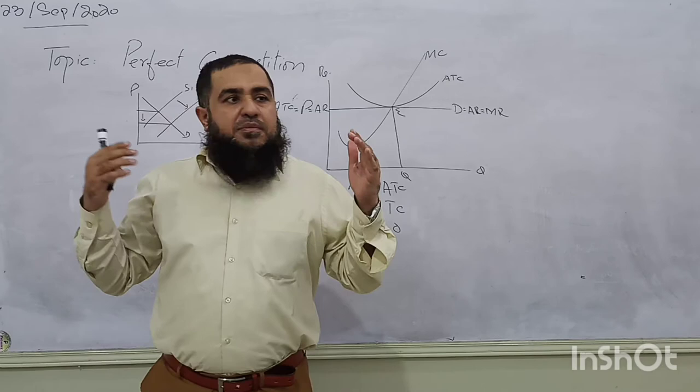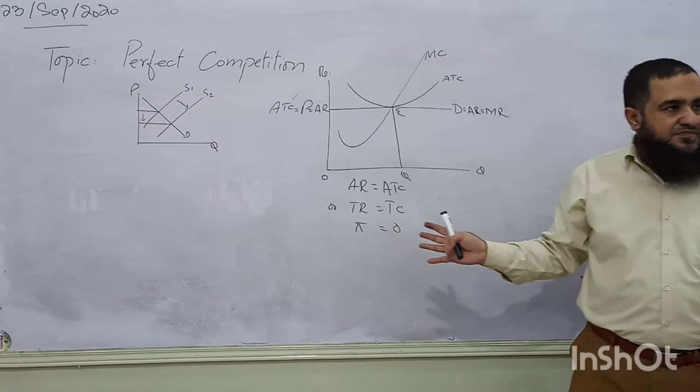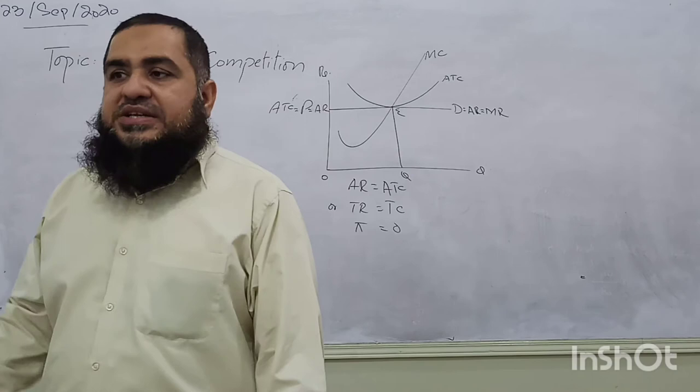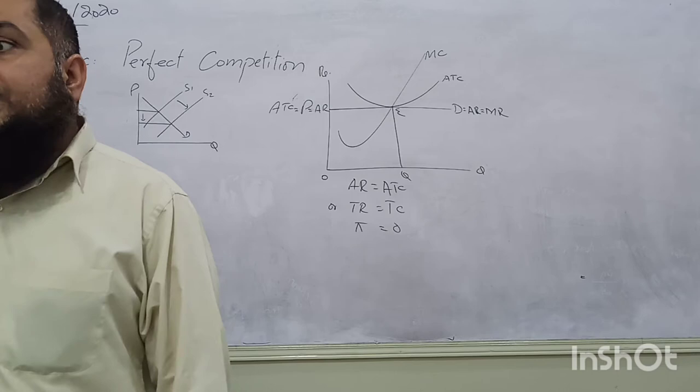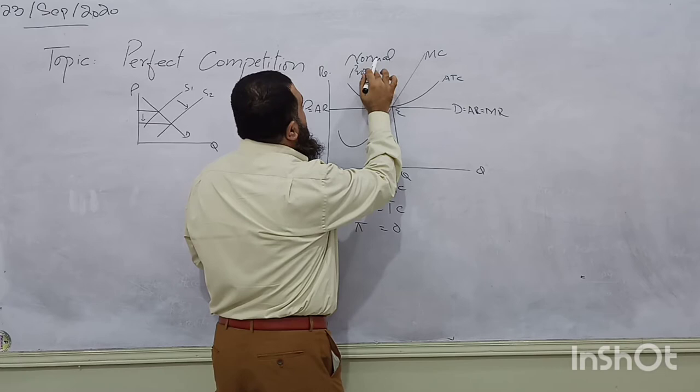That means after paying all factors of production, including the entrepreneur, according to their opportunity cost, there is nothing left over with the firm. So the firm itself has no retained profit — it has paid the entrepreneur in the form of dividend according to their opportunity cost. That profit level is called normal profit.